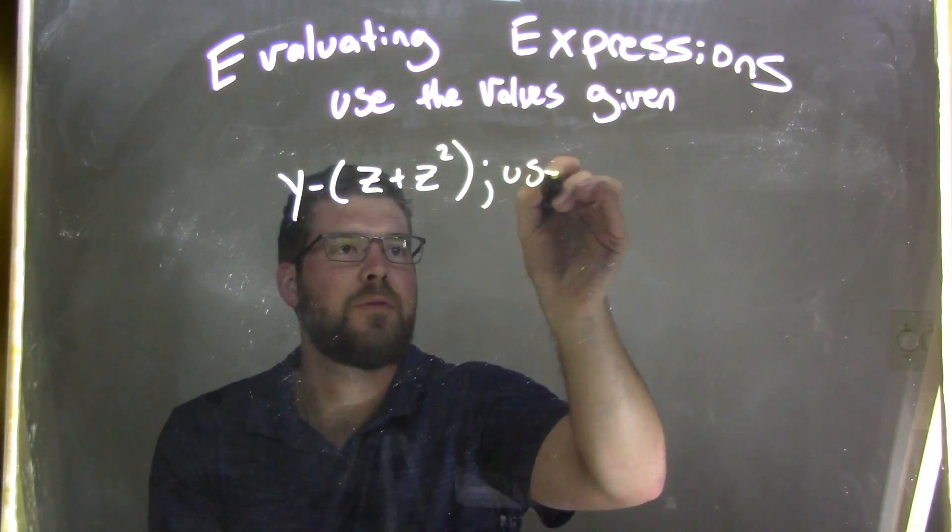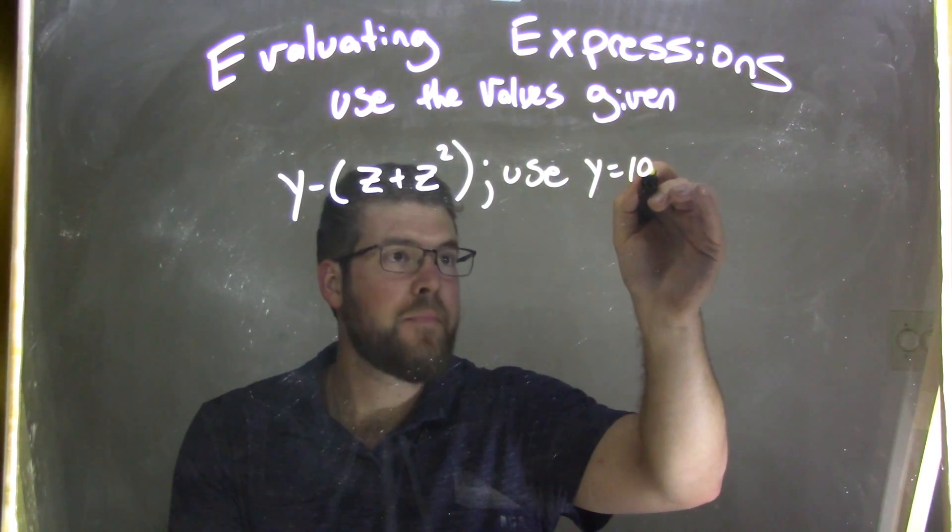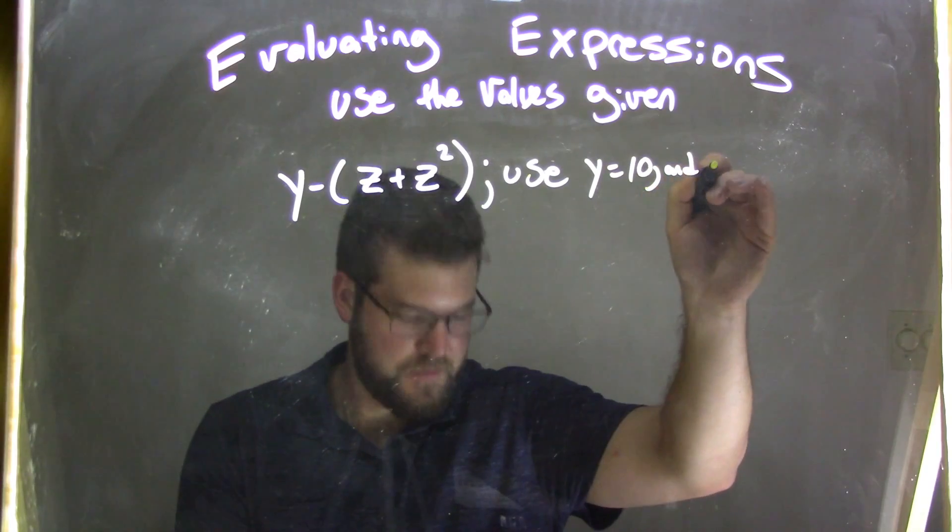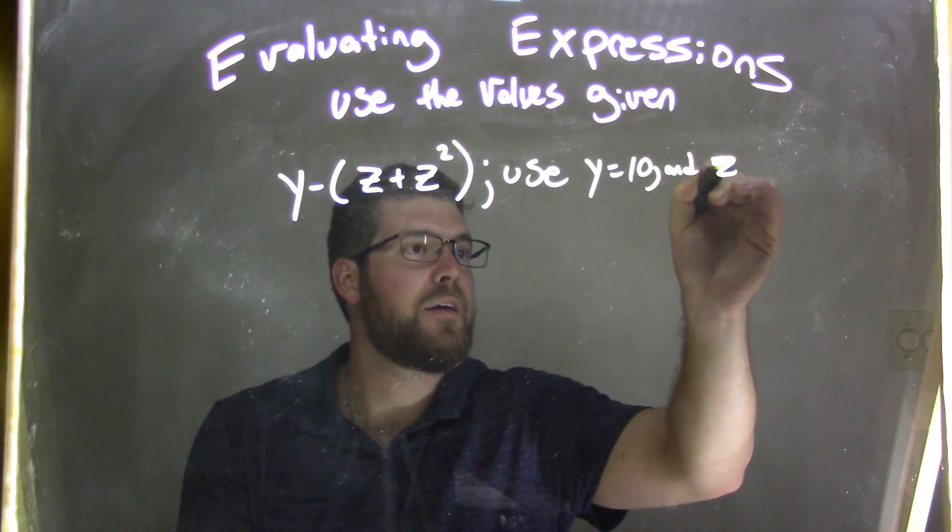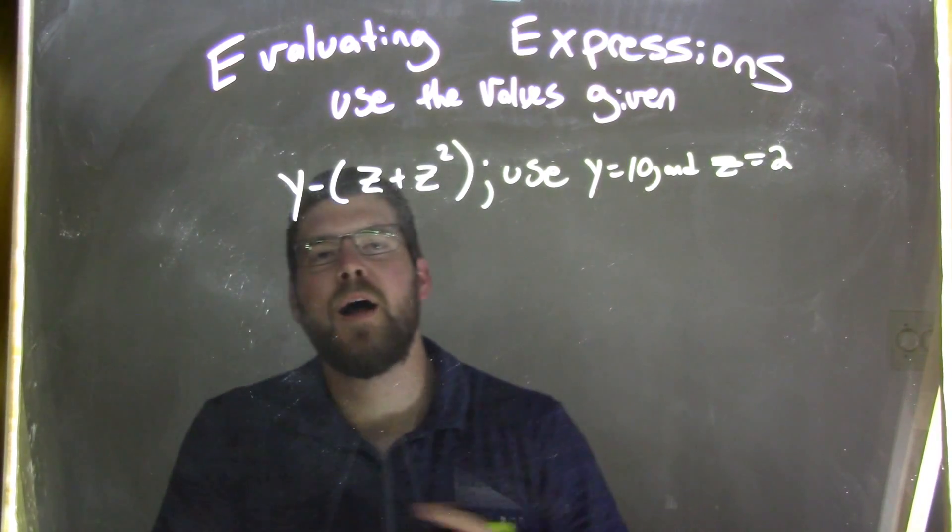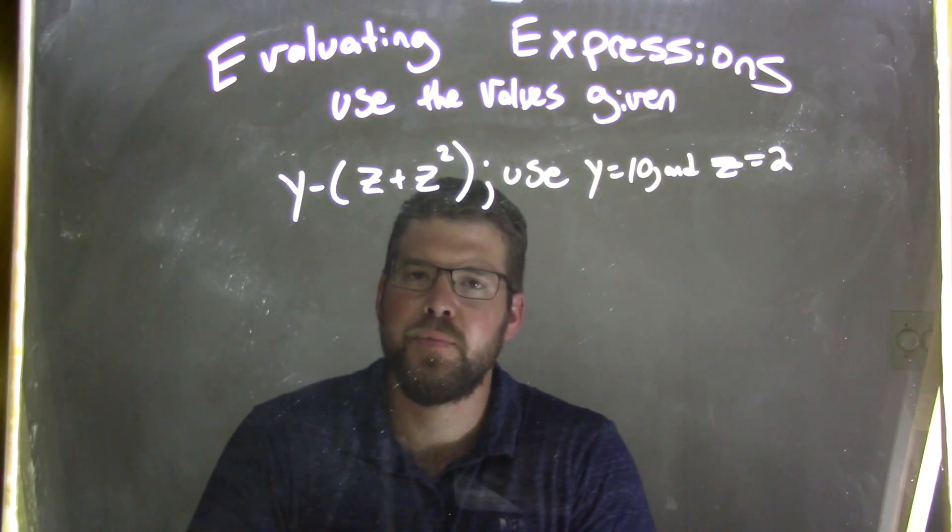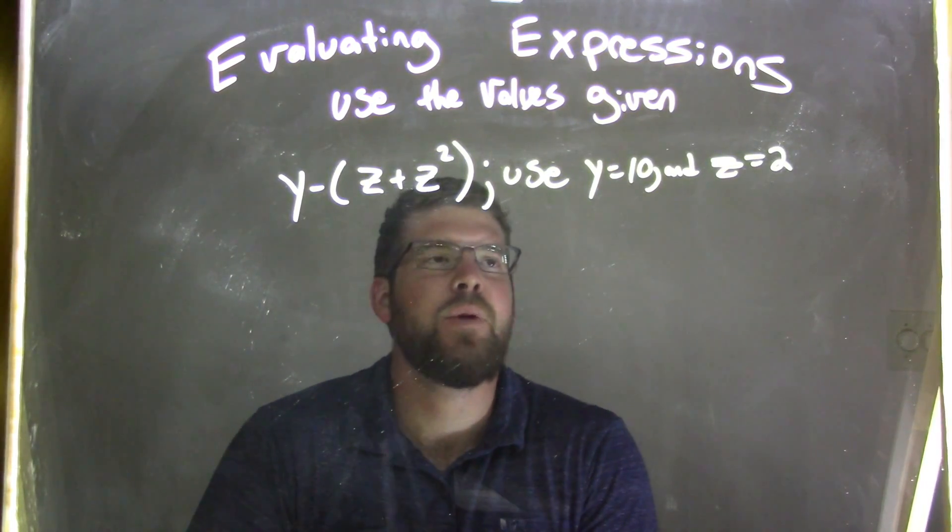and we need to use y equals 10 and z equals 10. So, y minus z plus z all squared, and we use y equals 10 and z equals 2. We need to substitute first.